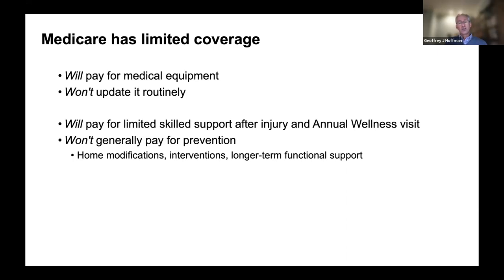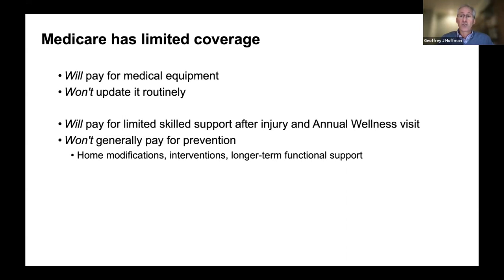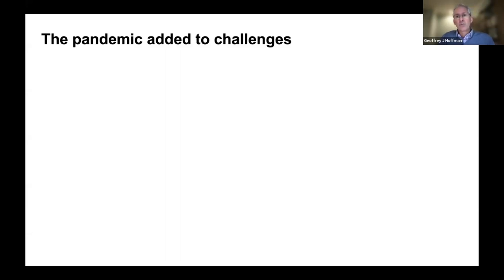Medicare won't generally pay for fall prevention itself. Things like home modifications — Medicare may help you get an assessment but won't pay for actual home modifications or renovations such as grab bars, improved lighting, or installing a ramp. It also typically will not pay for community interventions and physical activity programs. What Medicare really isn't designed for is longer-term functional support, which is exactly the type of support needed when thinking about intrinsic and extrinsic fall risk factors.